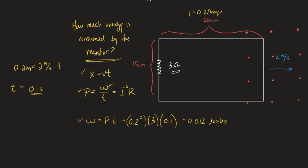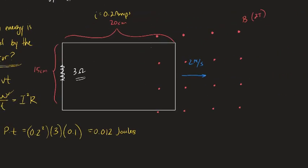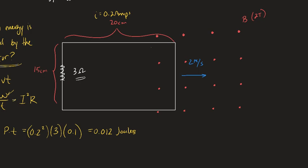If the little square of wire is moving at a constant velocity, does there need to be an applied force to continue moving at that velocity? Excellent question. Excellent question. And exactly where I want to go next. This is how much energy is consumed in the resistor. That energy has to come from somewhere.